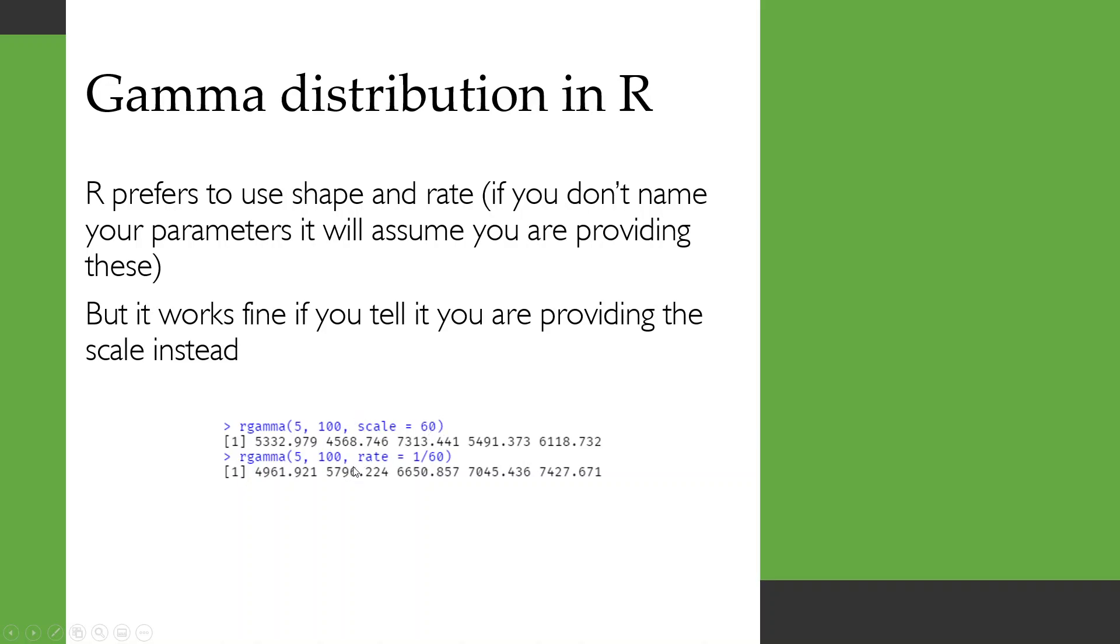If you want to know what rate you should supply, it's just 1 divided by the scale, so 1 divided by 60. These two are giving you samples from exactly the same distribution.